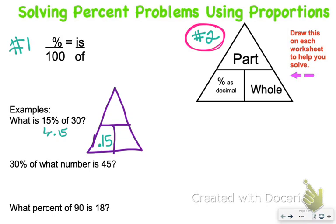The next thing I need to look at is what is the other piece of information. It says of 30. Of is always the big whole. So if you see the word of, the number after it goes in the whole category, that bottom right section. That's all the information we're given, so we're going to put an X in the top.